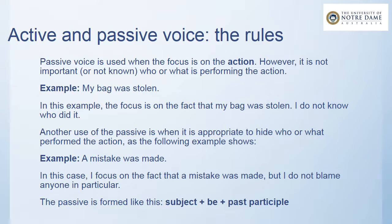The passive is formed like this. We need a subject, then we need some form of the verb 'to be', and then we need a past participle. If we go back to our first example, my bag was stolen: 'my bag' is the subject, 'was' is the past tense form of the verb 'to be', and 'stolen' is the past participle of 'steal'.